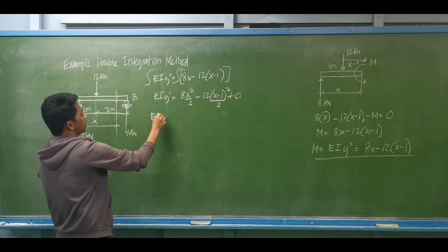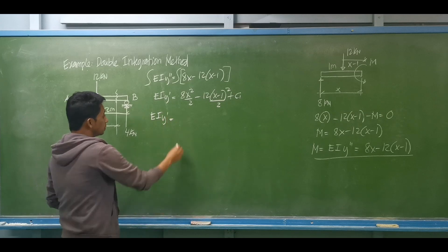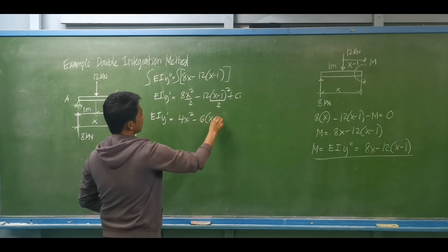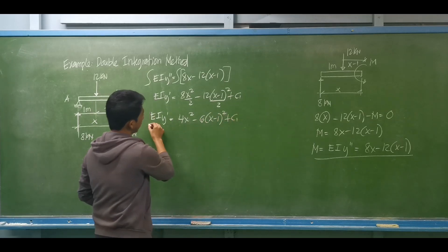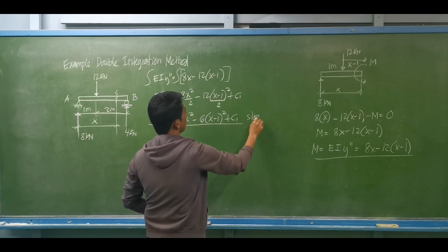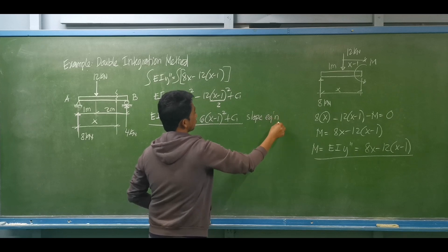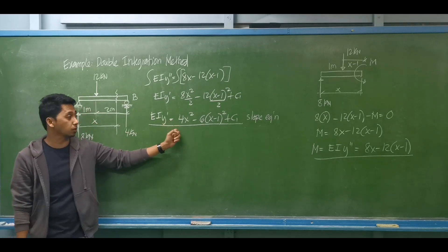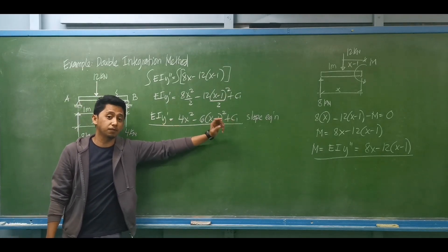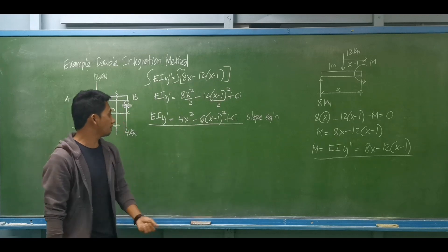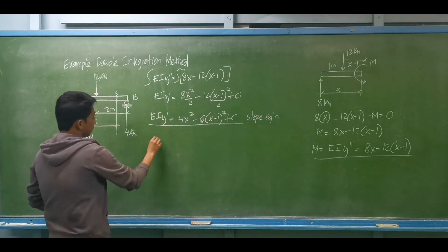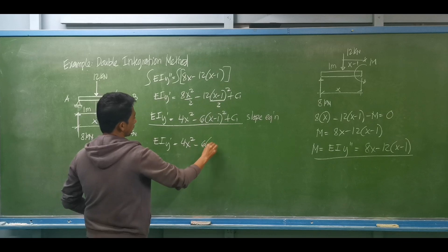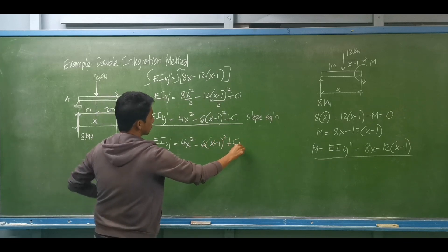Simplifying, we have EI y prime is now equal to 4x squared minus 6(x minus 1) squared plus C1. This is our slope or rotation equation. We can determine the rotation or slope at any point of the beam using this equation. All we have to do is first determine the value of the first arbitrary constant.